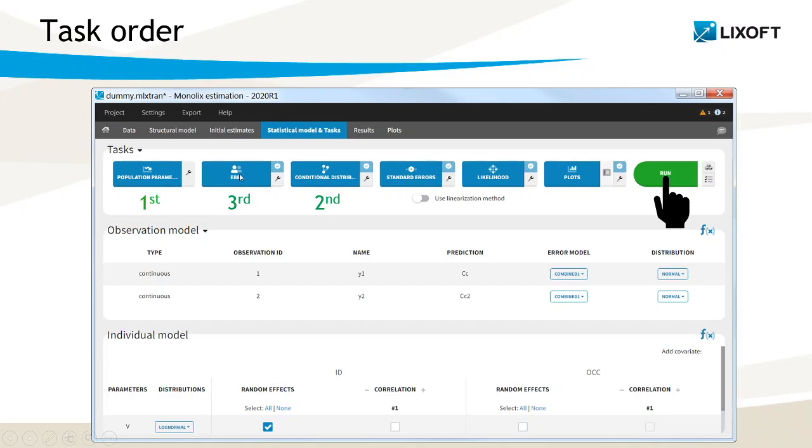If the EBEs task is run individually before the conditional distribution task, an approximate mean calculated over the last iteration of the SAEM algorithm is used as a starting point for the maximization.